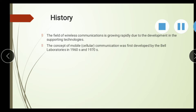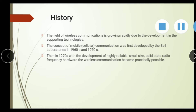The concept of mobile communication was first developed by Bell Laboratories in 1960 and 1970. The first cordless mobile came from Bell Laboratories. Then, in 1917, with the development of highly reliable, small-size, solid-state radio frequency hardware, wireless communication became practically possible.